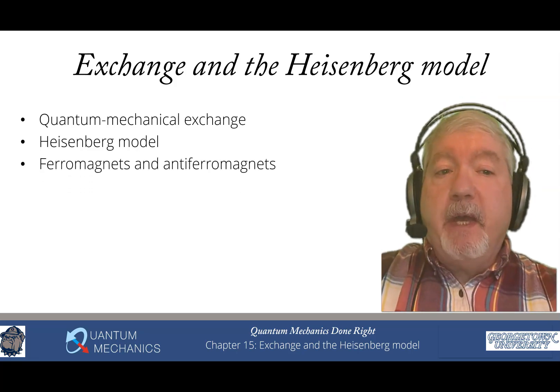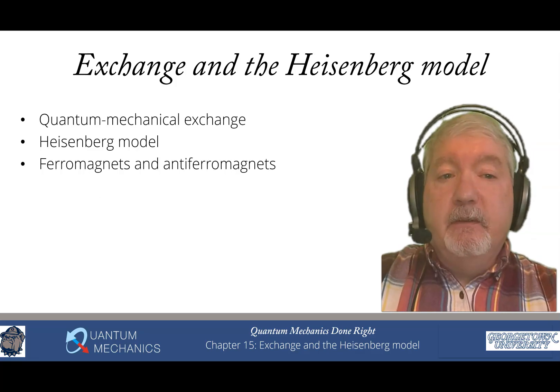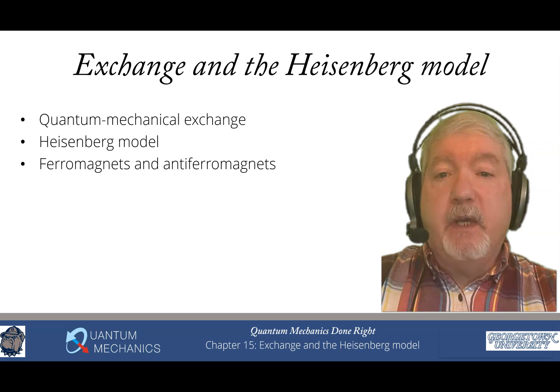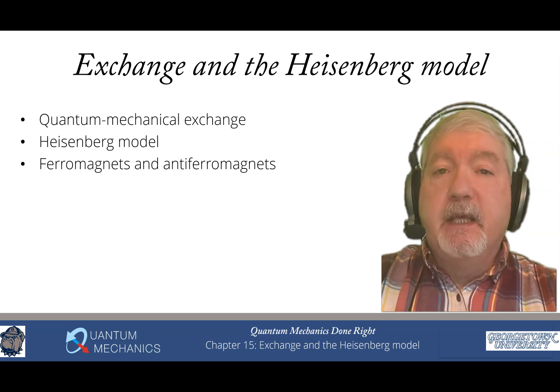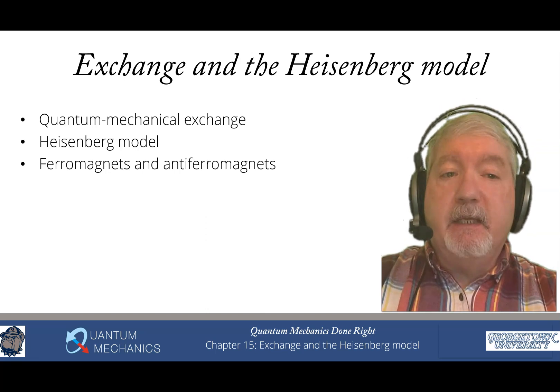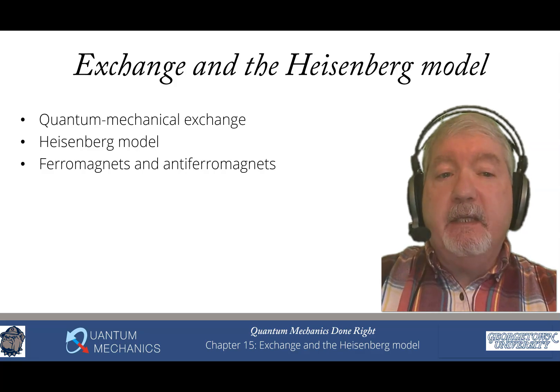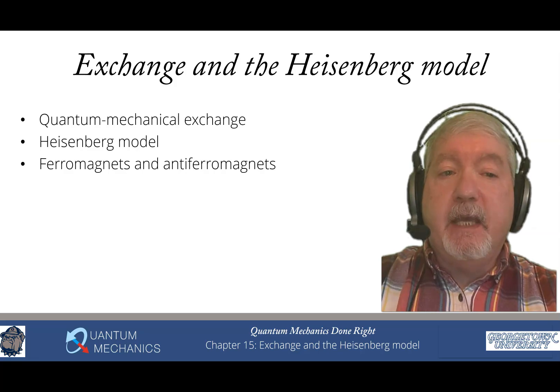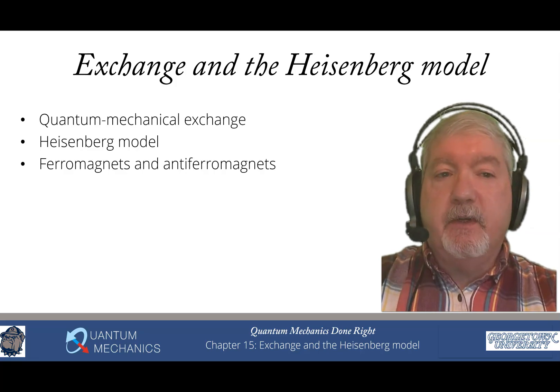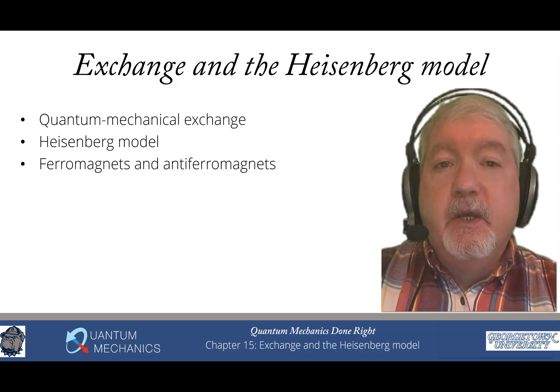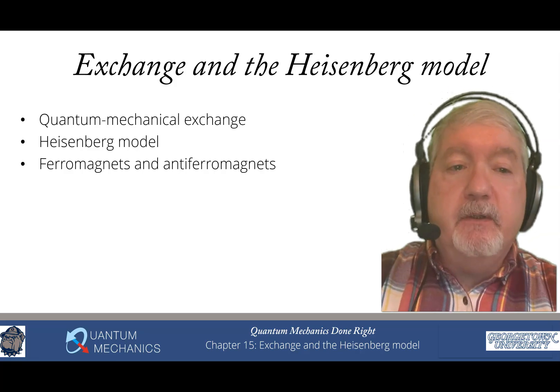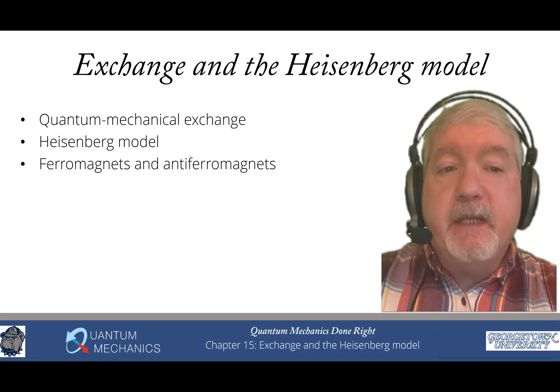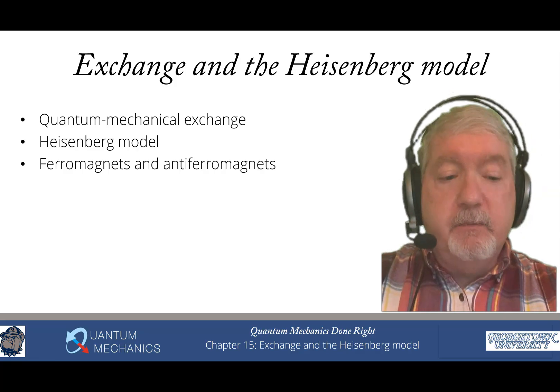When we talk about Heisenberg spin models, there are two varieties of them, just like with the Ising and the XY model. There's the ferromagnetic case, and there's the anti-ferromagnetic case. The anti-ferromagnetic case is one that many people like to study because it can have properties such as frustration and other things like that, which lead to very interesting behavior. The simplest case is the ferromagnetic case, but even that case is not so simple.